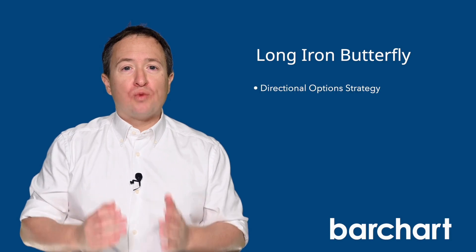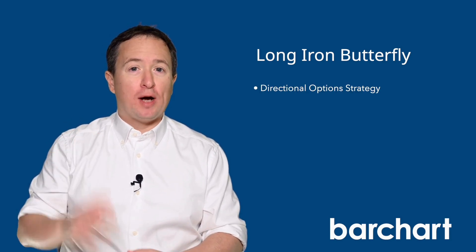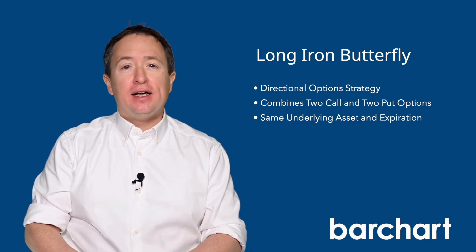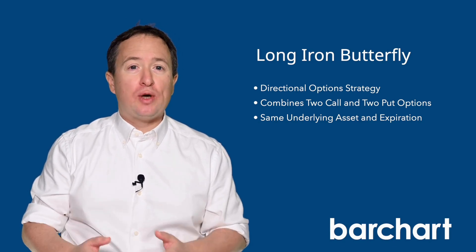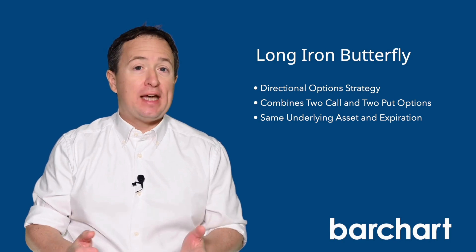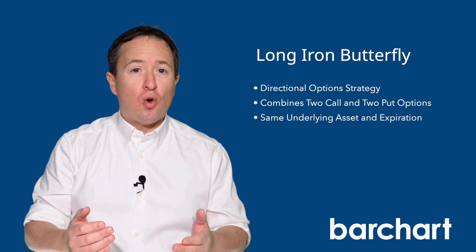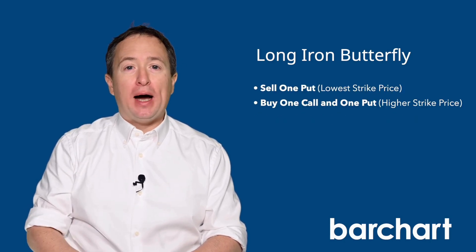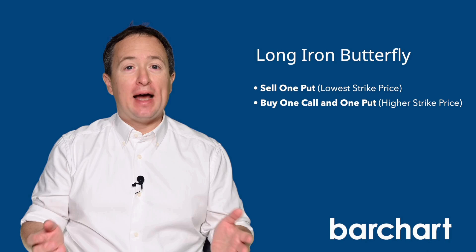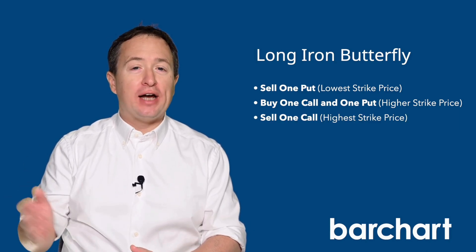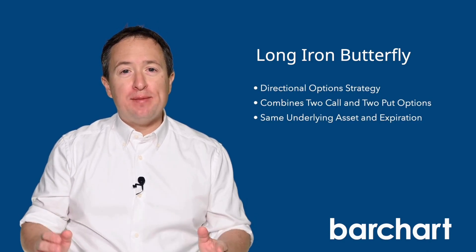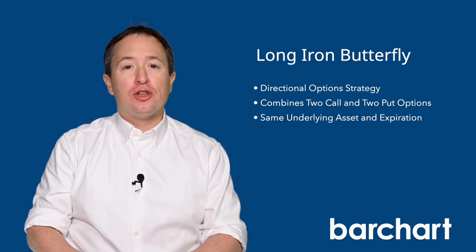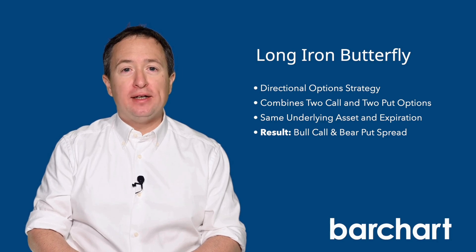The long iron butterfly is a directional option strategy involving four options, two at the same strike price, on the same underlying asset, and with the same expiration date. This strategy works best if you anticipate the asset will trade with higher volatility by expiration. For example, you might trade this type of strategy right before an earnings or some other big announcement. To set up the trade, you'll sell one put option, buy a call and a put option at a higher strike — usually at the money — and then you'll sell a call at an even higher strike price. All options share the same underlying asset and expiration date, and the distance between the middle and the outer strikes are the same. The result is a bull call and a bear put spread that results in a net debit.